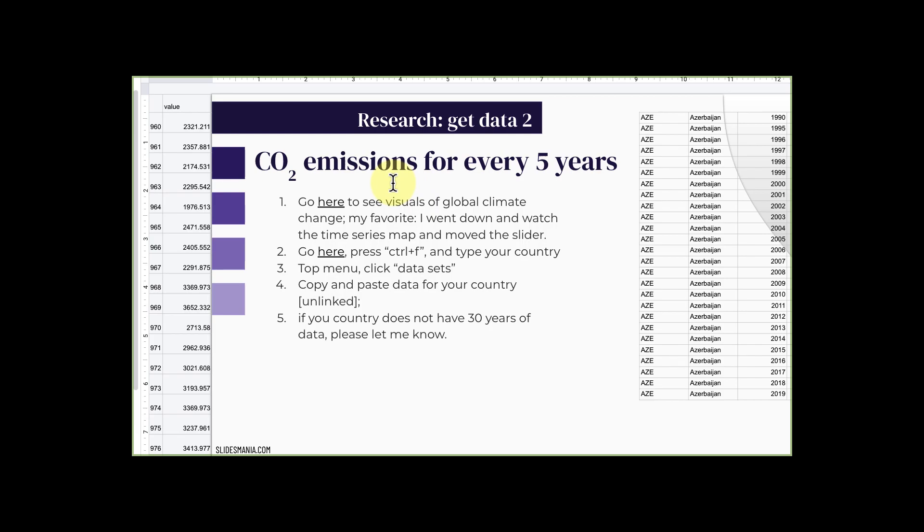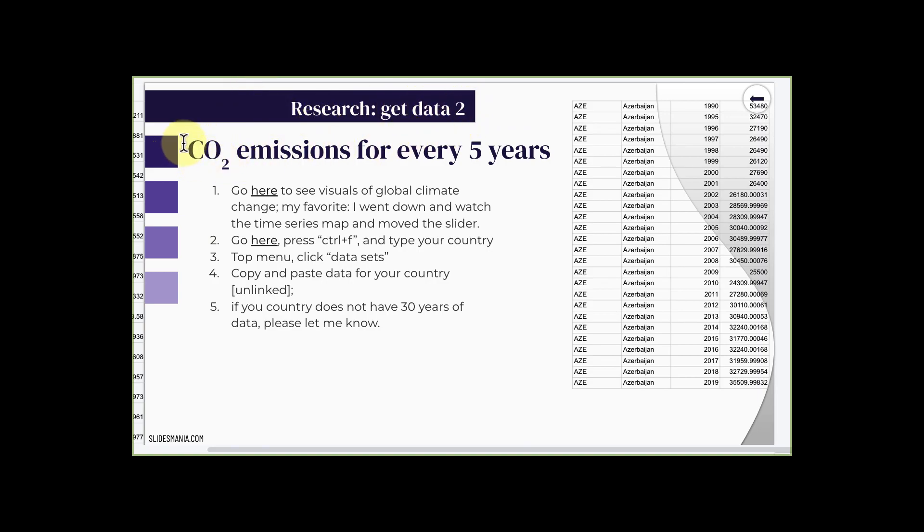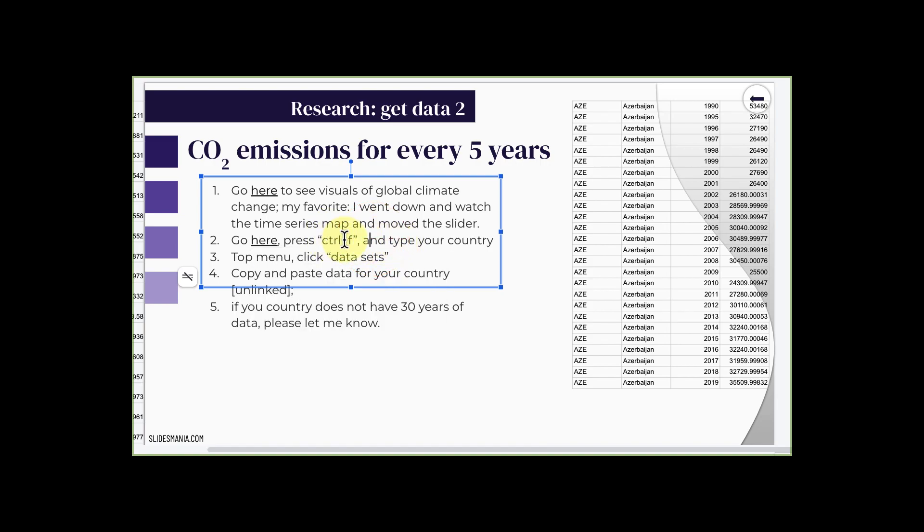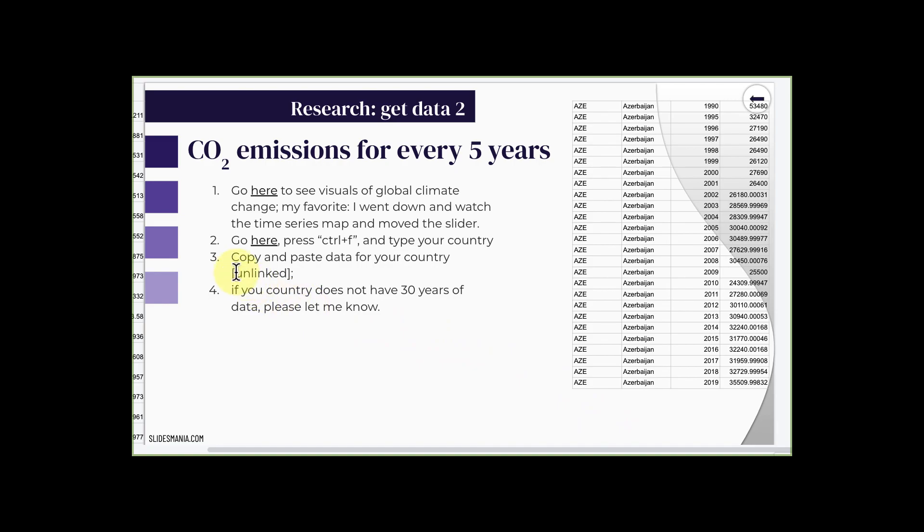Getting data number two was the carbon monoxide emissions for every five years. Alright, research data number two is the CO2 or carbon monoxide emissions for every five years. If you want to see something cool, you can just go there and check it out. That's what I liked, but not necessary. Number two, go here. It's a spreadsheet that I found that has a CO2 emissions and press Control F to find your country. Control F is just Find. Then you're going to type in your country. You're going to copy and paste your data from your country here. And then it's going to give you an option. Paste or Unlinked, do Unlinked. And if your country does not have 30 years, please let me know. So I have the date here and then I have the carbon monoxide.